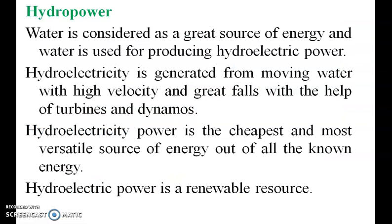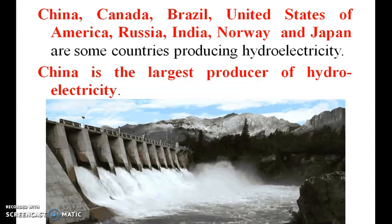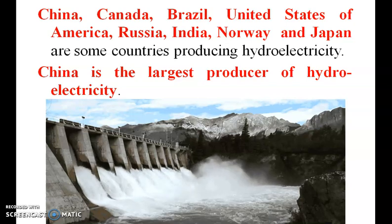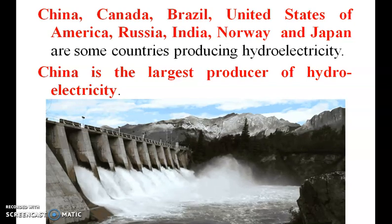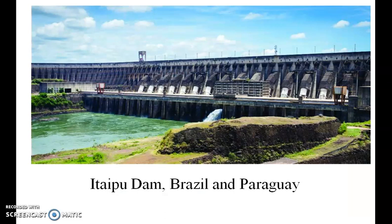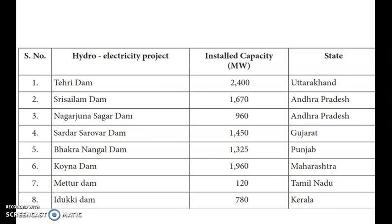Hydropower: water is considered a great source of energy and is used for producing hydroelectric power. Hydroelectric power is generated from moving water with high velocity and great force, with the help of turbines and dynamos. China, Canada, Brazil, United States of America, Russia, India, Norway and Japan are some countries producing hydroelectricity in large amounts. China is the largest producer of hydroelectricity. In India, the famous hydroelectric projects include Tehri Dam, Srisailam Dam, Nagarjunasagar Dam, Sardar Sarovar Dam, Bhakra Nangal, Koyna, Mettur and Idukki.